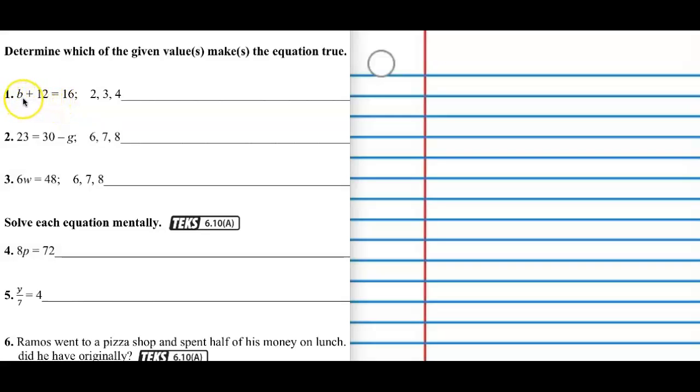All right, so we have a couple more words, three more words actually I want you to review. This letter B has a special label as well. It represents an unknown amount. What do we call a letter that represents an unknown amount? And sometimes it could be a symbol like an open square or something like that. What is that? Very good. That's called a variable.